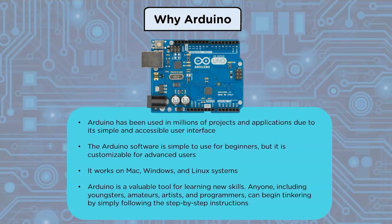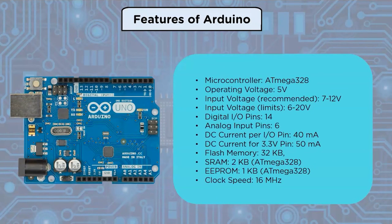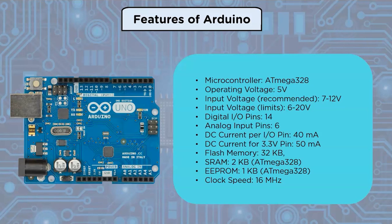Features of Arduino: Arduino has a microcontroller of ATmega328 and the operating voltage is 5 volts, whereas input voltage is recommended to be from 7 to 12 volts and input voltage limits from 6 to 20 volts. There are 14 digital input/output pins, 6 analog input pins, DC current per I/O pin of 40 milliampere, and DC current for the 3.3 volt pin of 50 milliampere. Flash memory is 32 kilobytes, SRAM is 2 KB, EEPROM is 1 KB, and clock speed is 16 MHz.